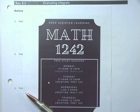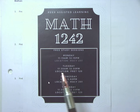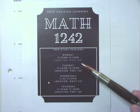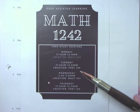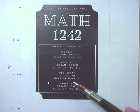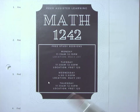For Calculus 2, you have study sessions. The PALS SI sessions are: Monday from 11:15 to 12:15 in Macy 201 — but that's actually during our class, so forget it. Tuesday from 11:30 to 12:30 in Front Row 120. Wednesdays from 4 to 5 in Macy 201. And Thursdays from 11:30 to 12:30 in Front Row 120.